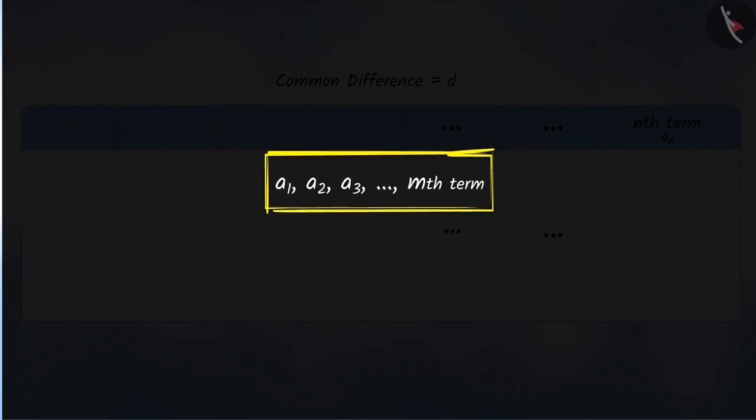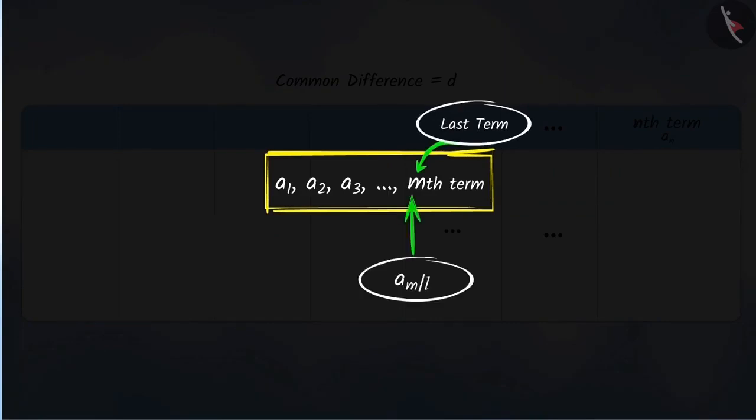If there are m terms in the AP, then a_m represents the last term, which is sometimes also denoted by L.